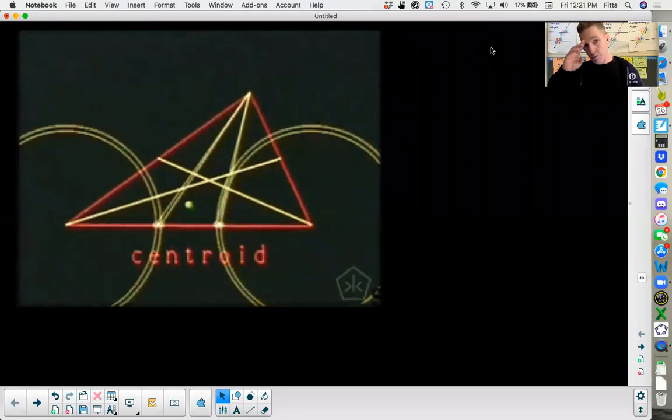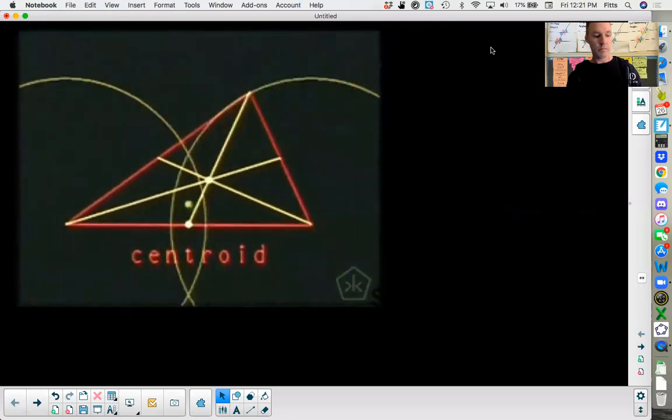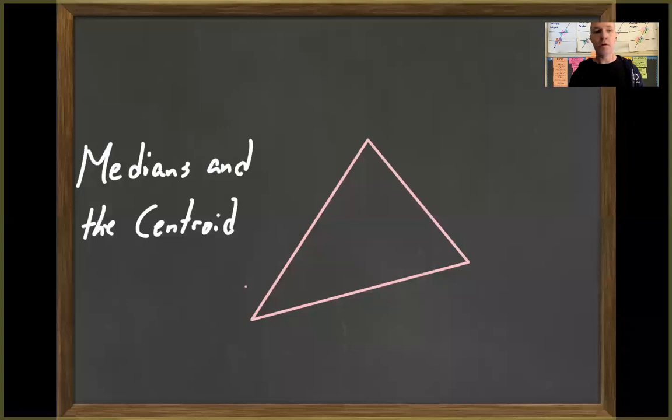So here we have medians and the centroid. Sounds like a children's story. Once upon a time there were three medians. Oh, here we go.